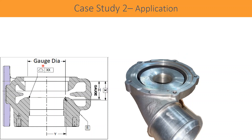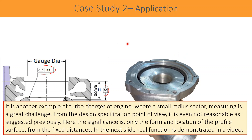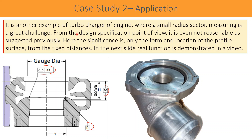It is another example — a turbocharger of an engine — where measuring a small radius sector is a great challenge. From the design specification point of view, it is even not reasonable, as suggested previously. The significance here is only the form and location of the profile surface from a fixed distance. In the next slide, let us see the real function in the video.